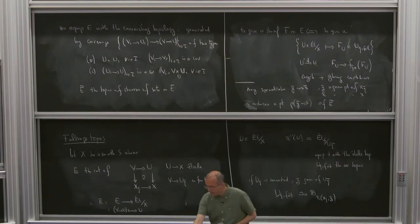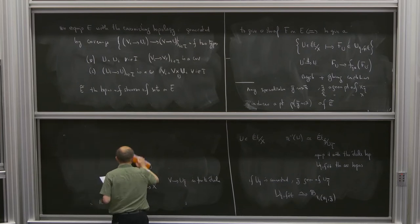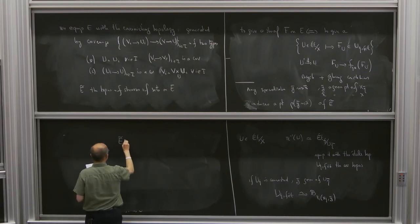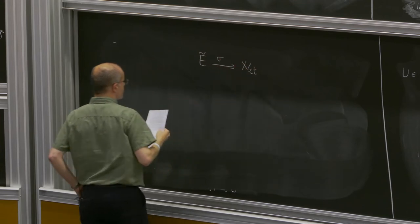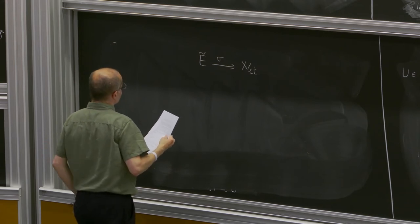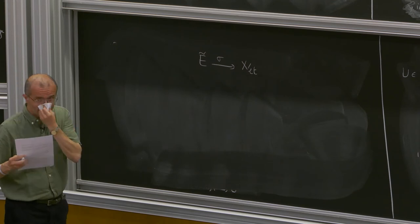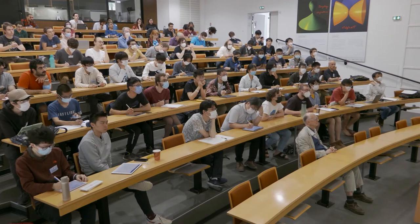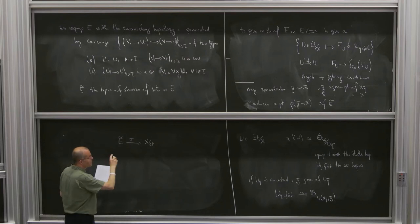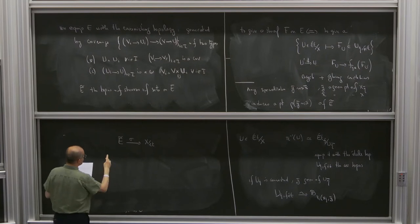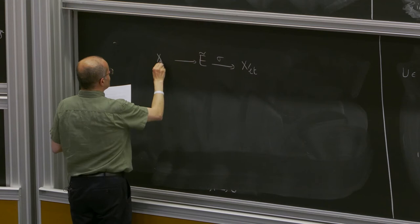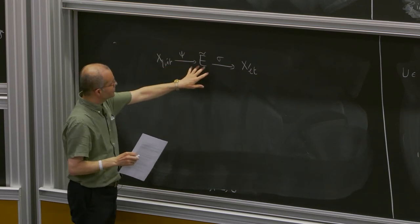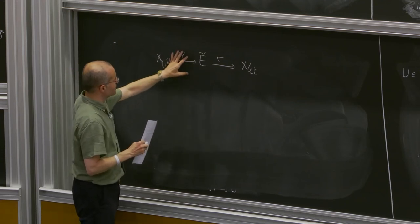This topos is related to the usual étale topos by two morphisms: a projection sigma to the étale topos of X, and a natural morphism psi from the étale topos of X_{eta-bar} to Faltings' topos, called the cospecialization map. They are defined by their pullback on objects of the site. If U is an étale map over X, then psi^*(U) is the Cartesian object, and if V -> U is an object of E, then psi^*(V -> U) = V, which is finite étale over U_{eta-bar} and hence étale over X_{eta-bar}.